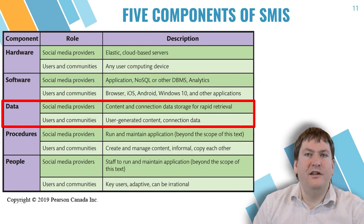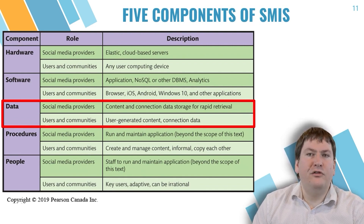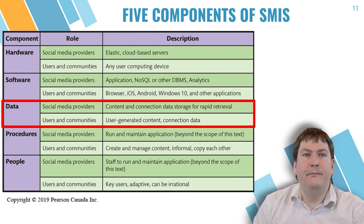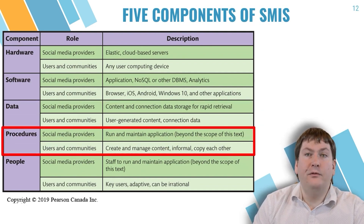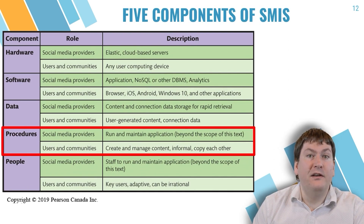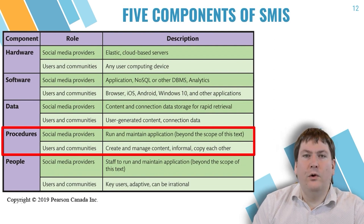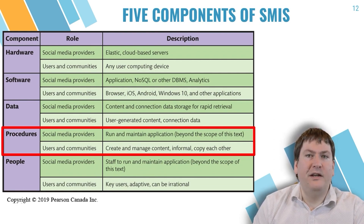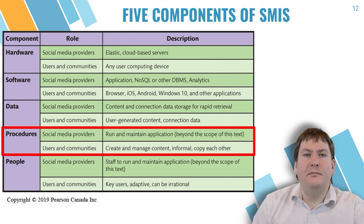The data for social media providers is any content, connection data, or metadata provided or extracted from users. For users and communities, it would be user-generated content, or UGC, created by the user themselves or shared by others in their community. Procedures for providers are the policies, rules, guidelines, and best practices used by employees to keep the network running. For organizations and businesses, these tend to be far more formal, often described in a social media policy that must be followed by all employees, aimed at achieving business goals and minimizing risk or liability.